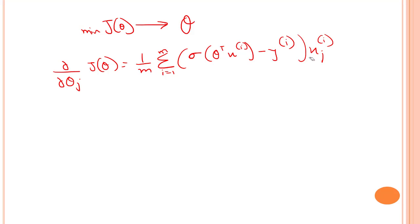The full expression is the sigmoid of theta-transpose x, minus y_i, times x_i. This is our logistic regression partial derivative, which helps reduce our log-loss function and eventually gives us our total theta values.